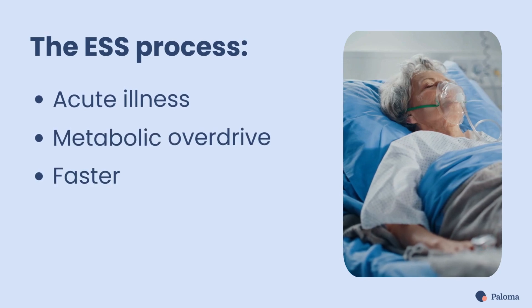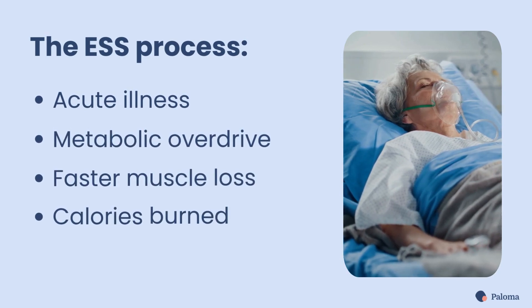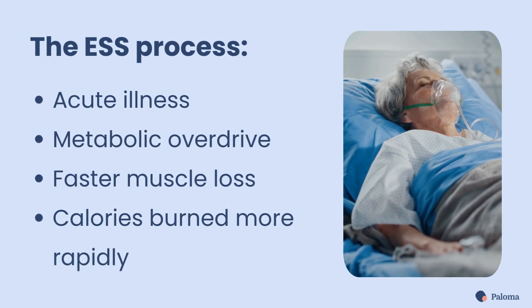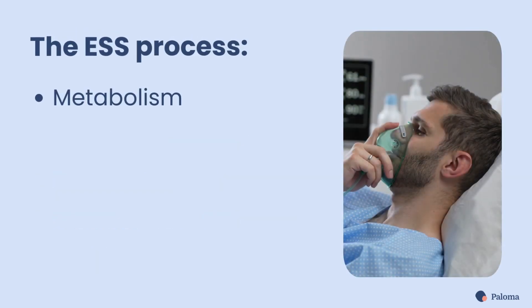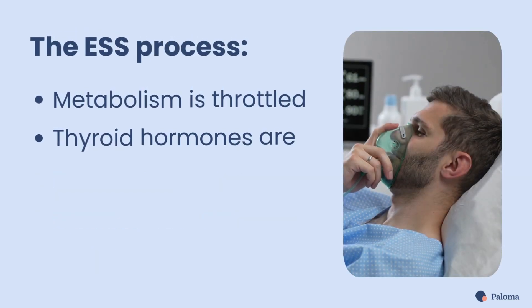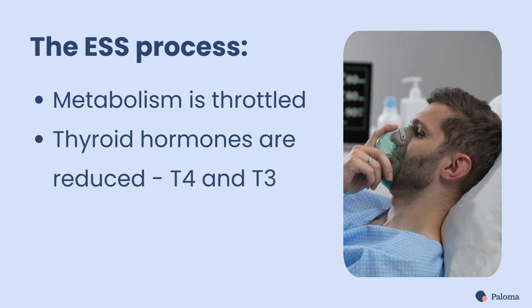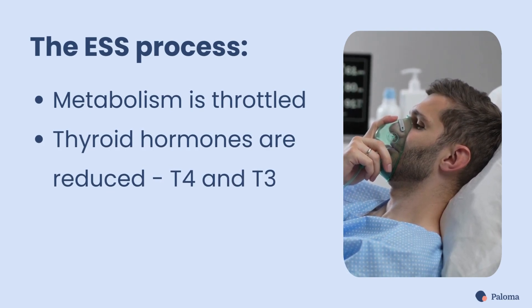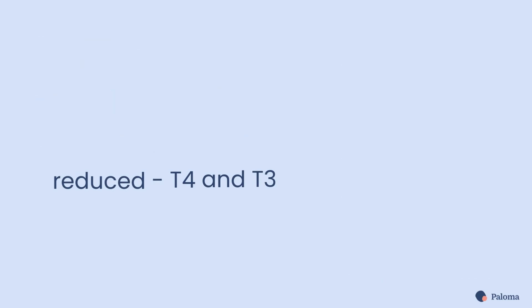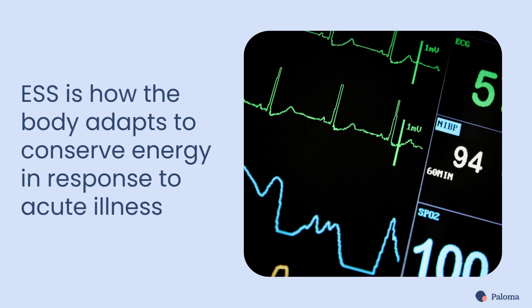During an acute illness, your body goes into metabolic overdrive — it speeds up the process of muscle loss and burns calories more rapidly. Your body then throttles back the speed of the metabolism and reduces levels of thyroid hormones, specifically T4 and T3. It's theorized that ESS is how the body adapts to conserve energy in response to acute illness.